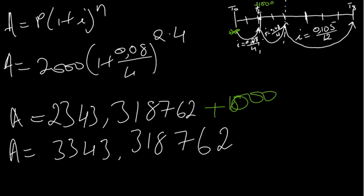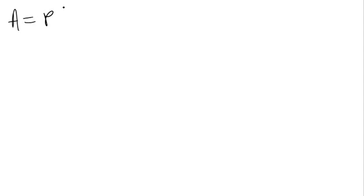Now I need to find the money at t4, before the interest rate changes. Using A = P(1 + i)^n, I take the previous amount as P. We are going from t2 to t4, so P = 3343.3187... × (1 + 0.08/4)^(2×4). We get A = 3917.2307... at t4. This is the amount for the first four years.